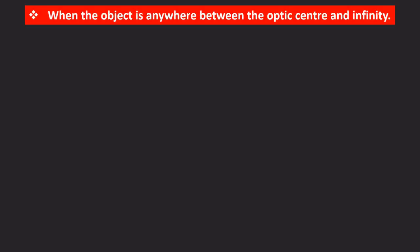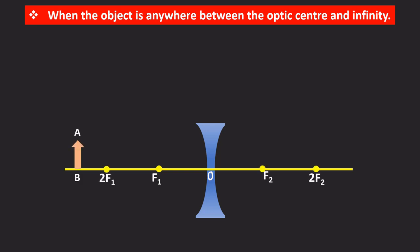Now let us find where the image is formed when the object is anywhere between the optic center and infinity. Let this be the concave lens with optic center O, principal axis and points on the principal axis. Let AB be the object which is present in between optic center and infinity.